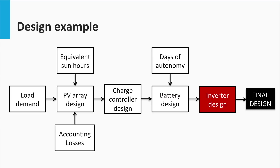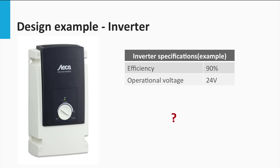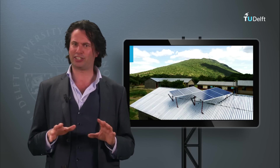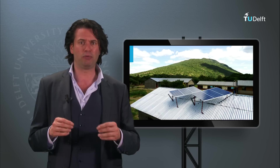Lastly, we come to the inverter sizing. Based on the inverter efficiency, the power rating needs to be calculated. An inverter is available with an efficiency of 90% and an operational voltage of 24 V. The AC load power demand is 200 W, so the minimum nominal power rating is estimated to be 222.2 W. Note that the inverter may be less efficient than its rated efficiency, so it is safer to include a margin for the power rating.